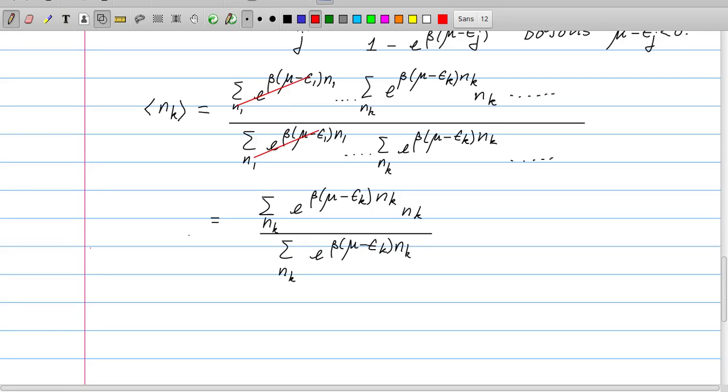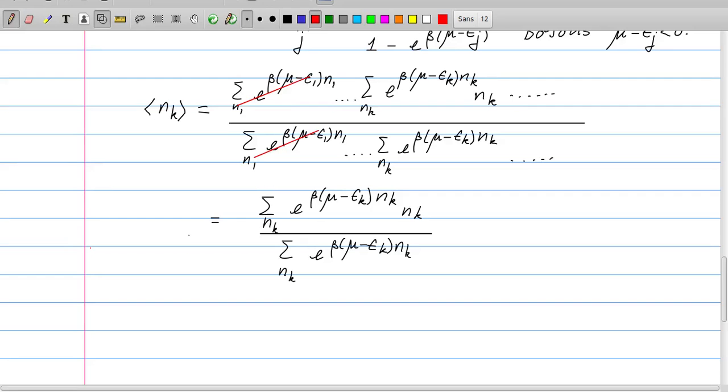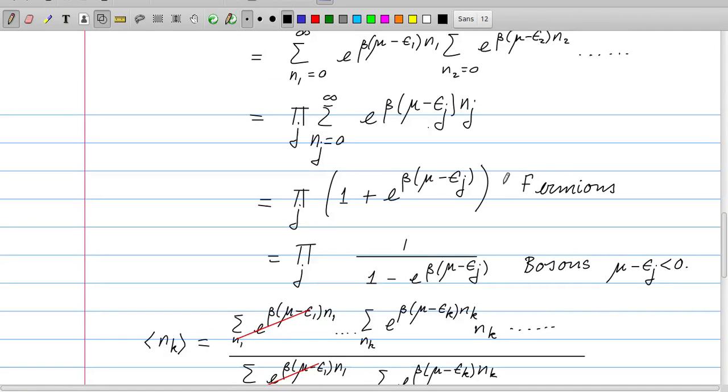So the result is surprisingly simple. It is this expression which only involves k. Because we have already worked out this sum, it's now convenient to work this out using the usual procedure, where we write this as d/d(beta epsilon k), or we can also use beta mu from the logarithm of the denominator, which is this sum over k e to the power of beta mu minus epsilon k nk.